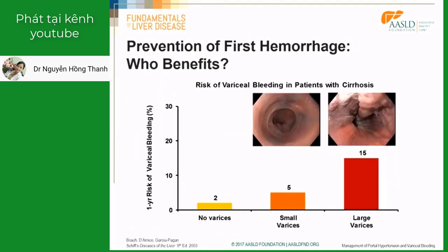The approach to the prevention of variceal hemorrhage depends on the findings in the first endoscopy. If no varices are found, the risk of variceal bleeding within one year is extremely low, around 2%. If varices are small, this risk is around 5%, still low. But it becomes much higher if we find large varices: a 15% risk of variceal bleeding at one year. I will provide data for these three different clinical scenarios.